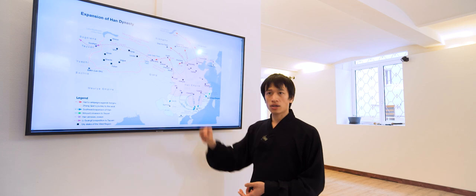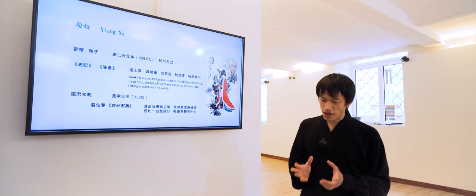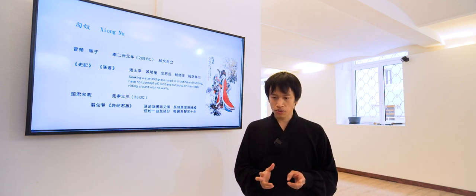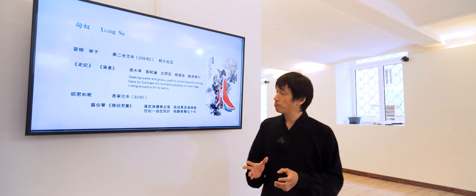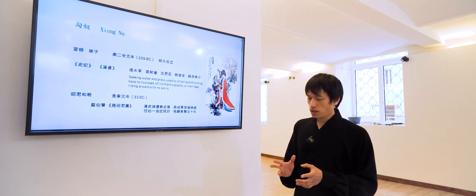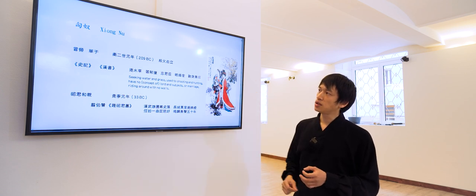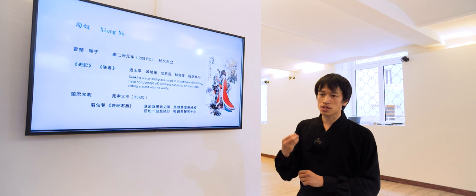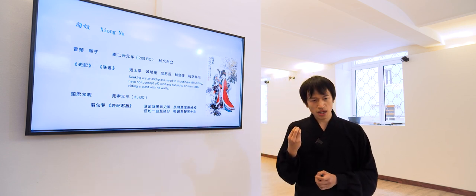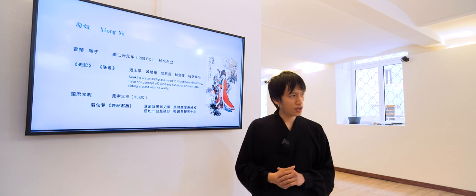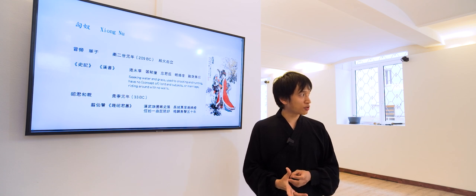Now let's look at Xiongnu. Xiongnu is a really famous northern nomad that was a big threat to the central kingdom. It is said they started with this person, Mo Du Chanyu. Chanyu is the title of the leader of Xiongnu, and he was a hostage, so to say, living in a neighboring country. Then his father decided to attack that country.